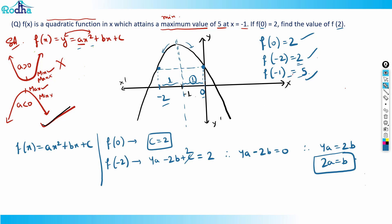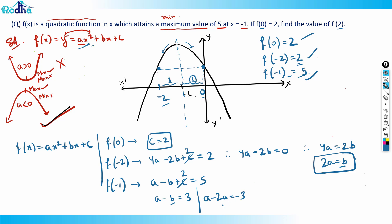Third equation: f(minus 1) = 5. Putting x = minus 1 gives a minus b plus c = 5. Since c = 2, we get a minus b = 3. Now substituting b = 2a: a minus 2a = 3, therefore a = minus 3. With a = minus 3, using a minus b = 3 gives b = minus 6.